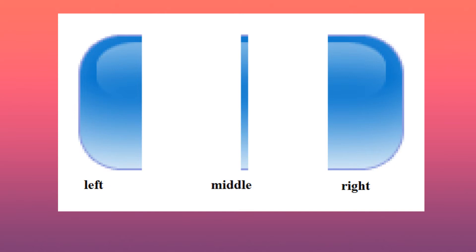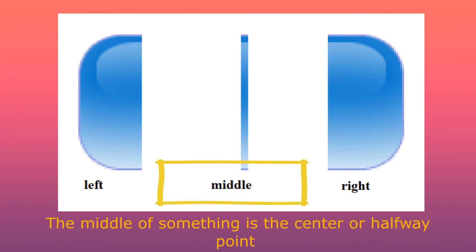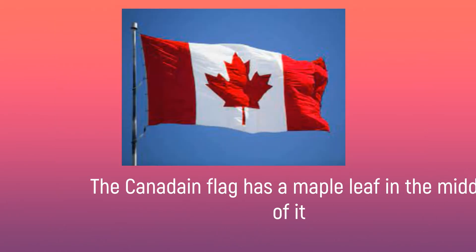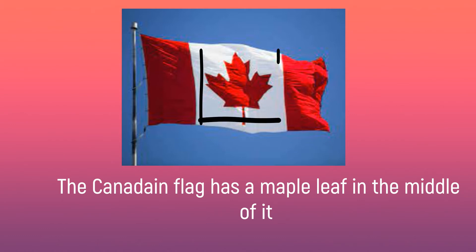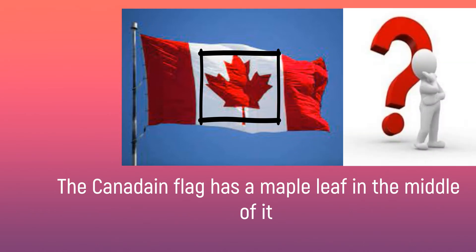The next word is 'middle.' The middle of something is the center or halfway point. For example: The Canadian flag has a maple leaf in the middle of it. This is the Canadian flag, with a maple leaf right in the middle. What does your country's flag look like? Does it have anything in the middle? Let me know in the comment section below.